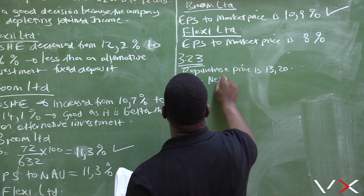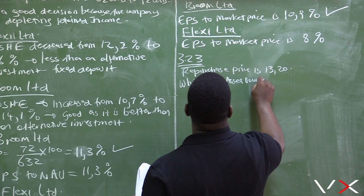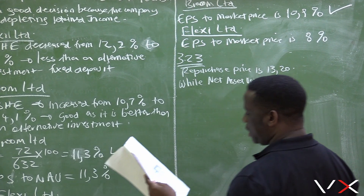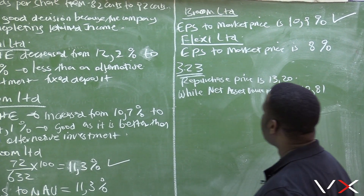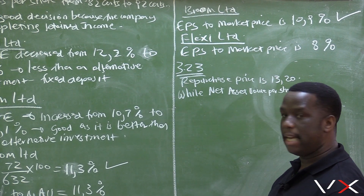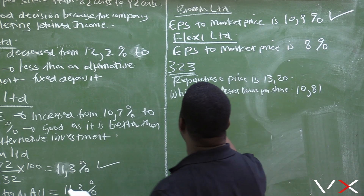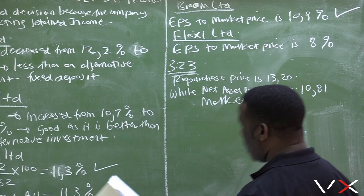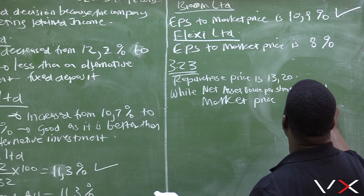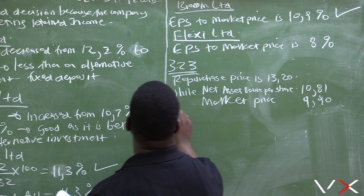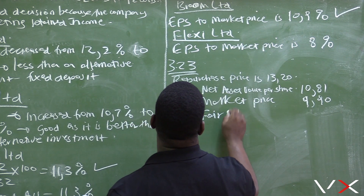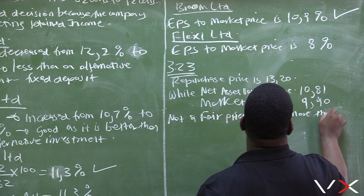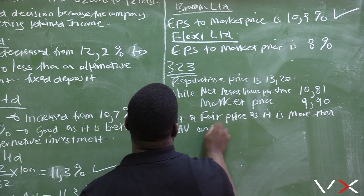The net asset value per share for Flexi Ltd is R10.81. The repurchase price of R20 is more than the NAV of R10.81. The market price is R9.90. So we can see that R20 is not a fair price, as it is more than both the NAV and the market price.